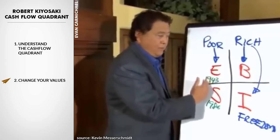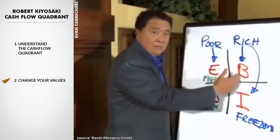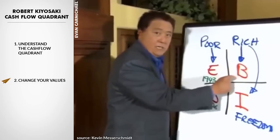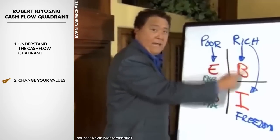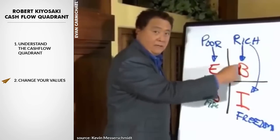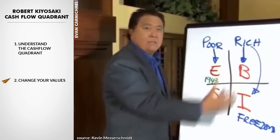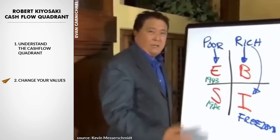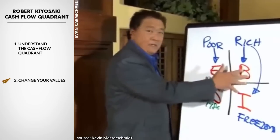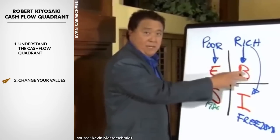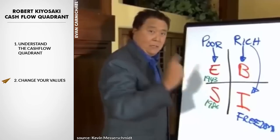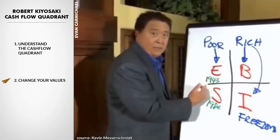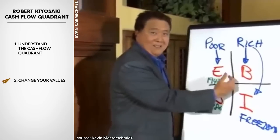Once you take the time — whether it's one year, two years, or five years — and you see the core values of the B and I side, you become unstoppable. Today I would never go back and get a job. I'd rather stay on this side, build companies, pay less taxes, and make more money. The key is a person needs to change their values — from my poor dad's values to the values of my rich dad.